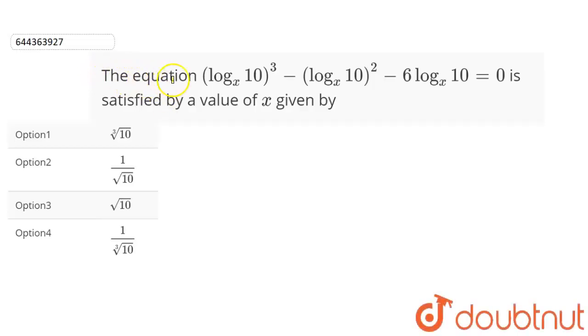The question says the equation log base x 10 cubed minus log base x 10 squared minus 6 log base x 10 equals 0. Then the value of x which satisfies the equation is given by, and we are given 4 options.